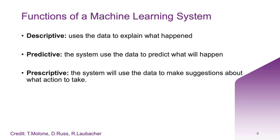The next function is known as predictive analysis, where the system uses data to predict what will happen in the future. Programmers choose a machine learning model, supply their data, and let the computer model train itself to find patterns or make predictions. We then move on to the third function, known as prescriptive analysis. This system uses the data to make suggestions about what action to take — it basically asks, now that you have an idea of what will likely happen in the future, what should you do? It suggests various courses of action and outlines the potential implications for each.